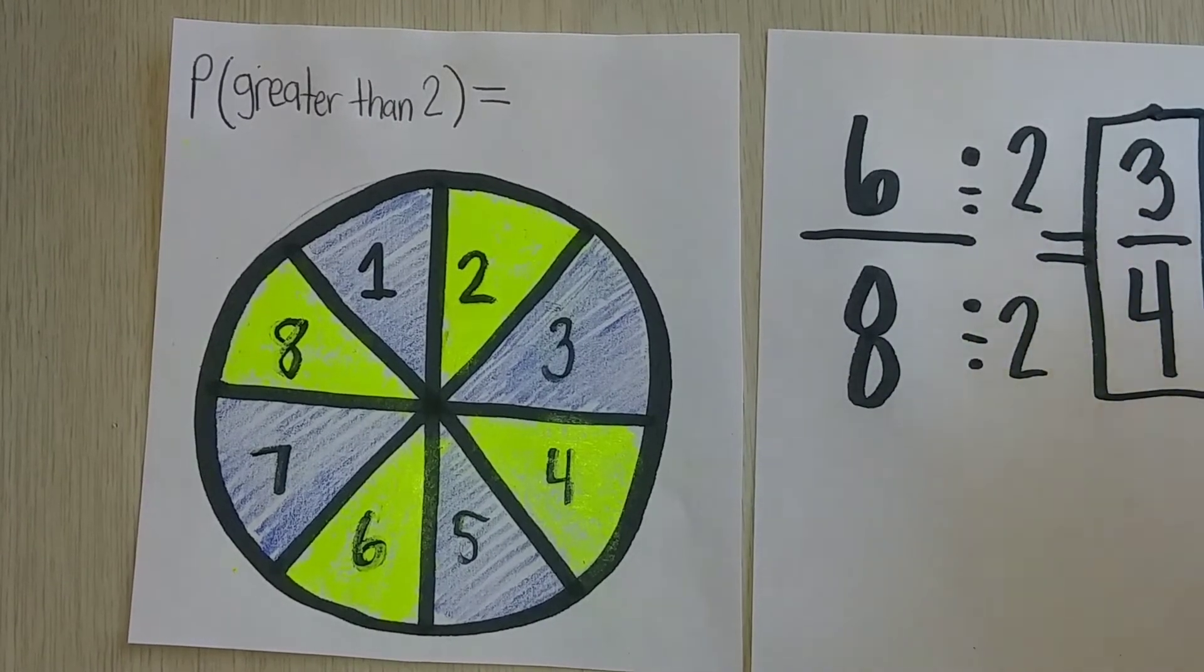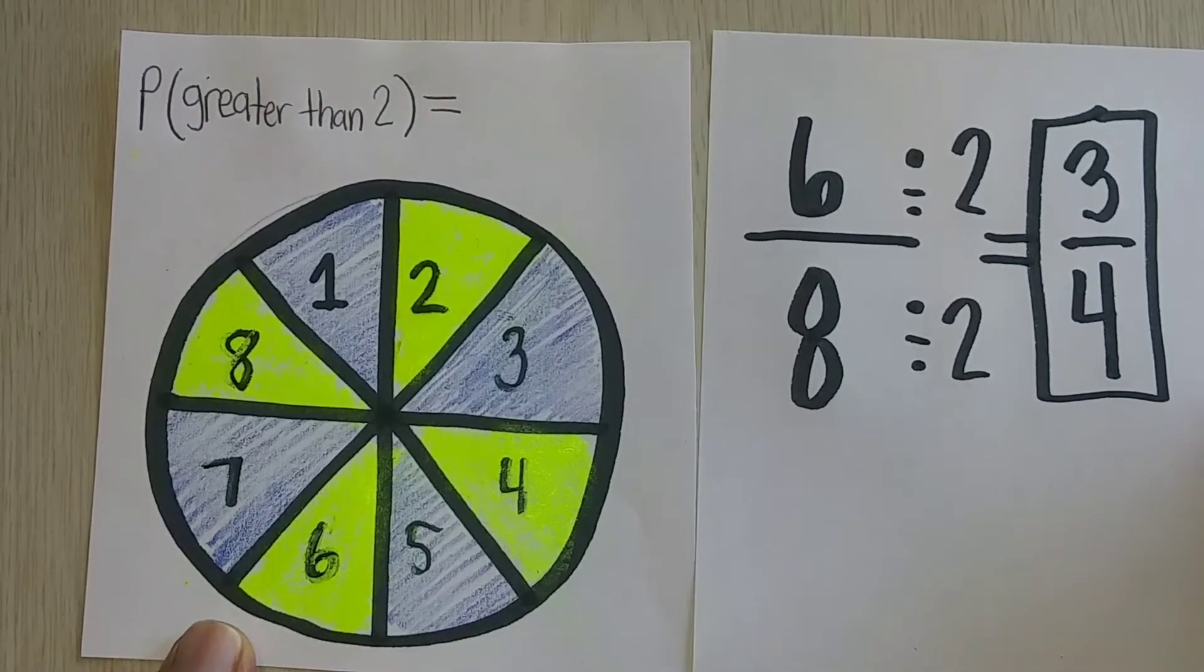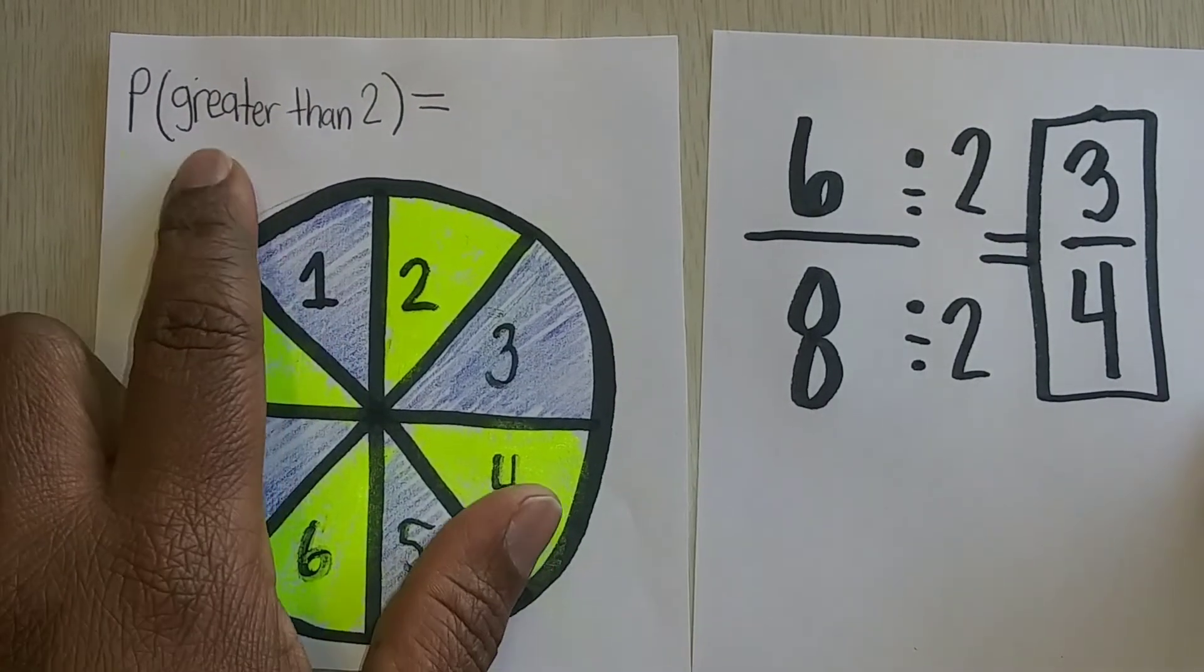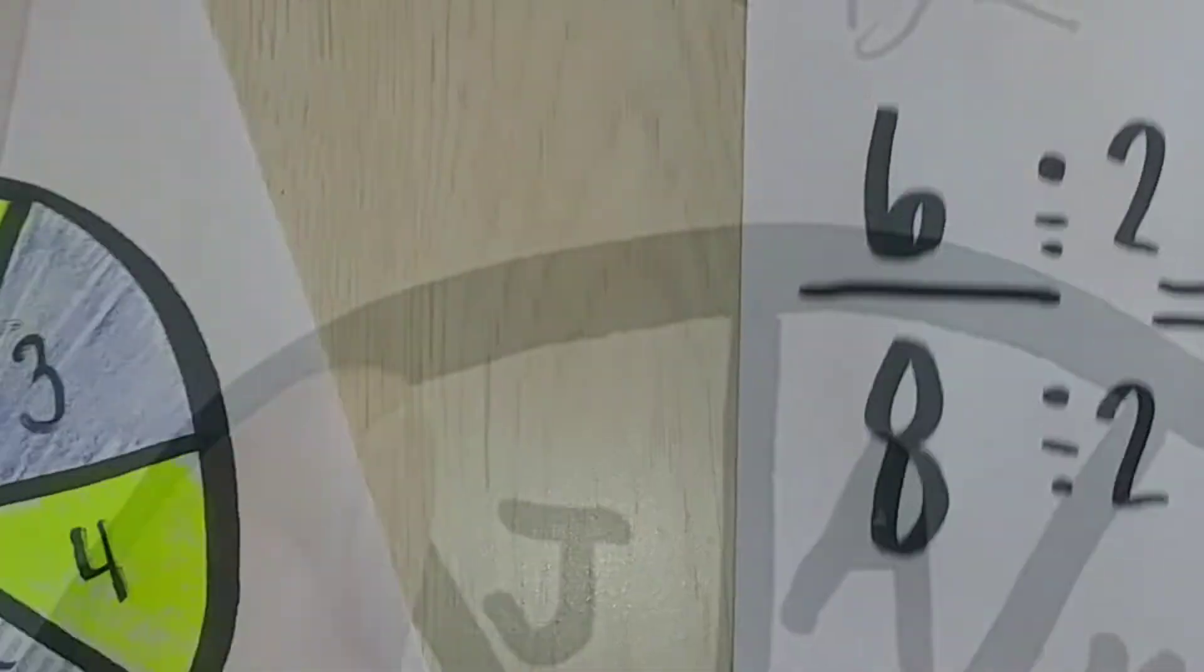So there is a three out of four or six out of eight chance that it will land on the probability of landing on something greater than two.